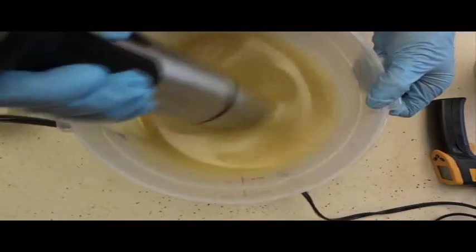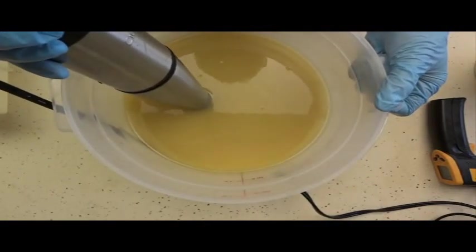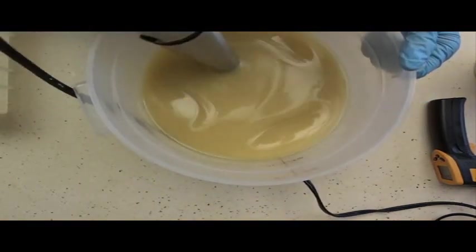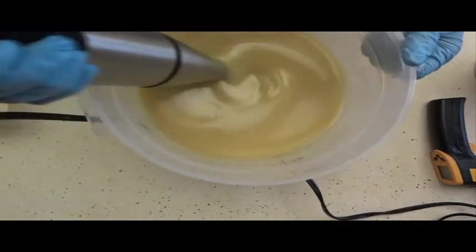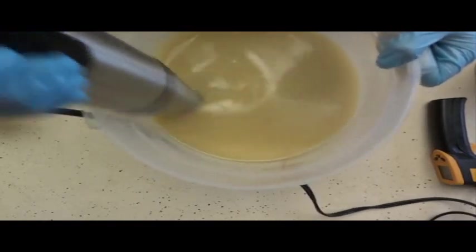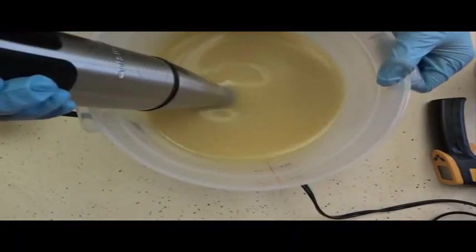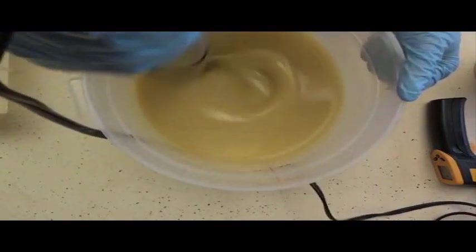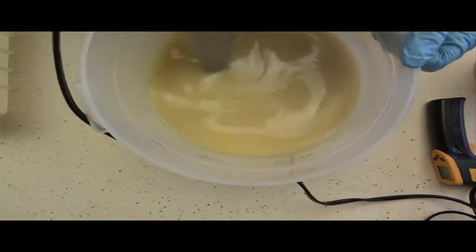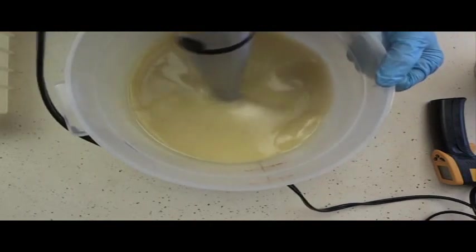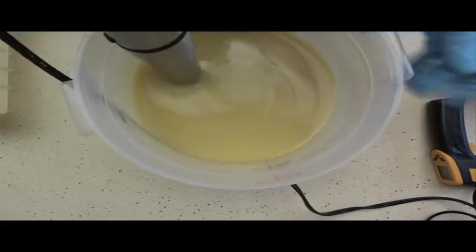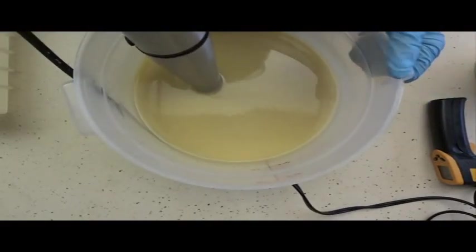So now you just want to mix it until it reaches a trace, just as with cold process soap. And we already have a light trace here. I'm just knocking those bubbles out. I'm using a different blender today. My other one broke. So I'm ready to pour this. I just like it to be a little thicker for my own personal preference.